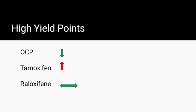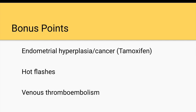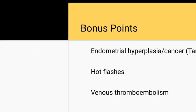Side effects of SERMs can appear on your shelf or board exam. Tamoxifen increases the risk of endometrial cancer and endometrial hyperplasia. Both raloxifene and tamoxifen can increase the risk of hot flashes and venous thromboembolisms. The agonist effects of tamoxifen on the uterus can lead to endometrial hyperplasia or cancer. However, tamoxifen and raloxifene are partial agonists in the bone, causing an increase in bone mineral density after menopause.